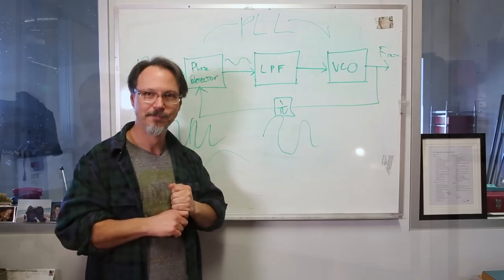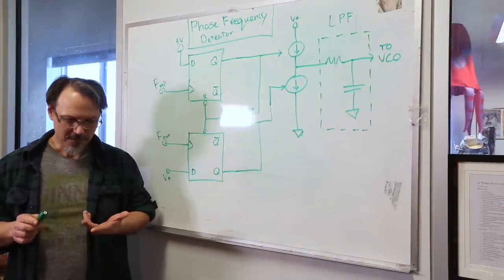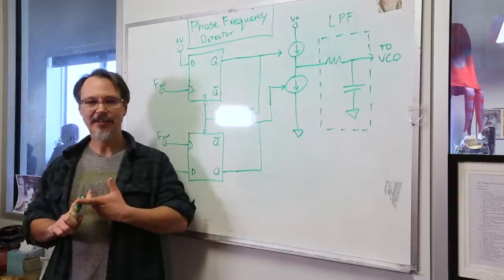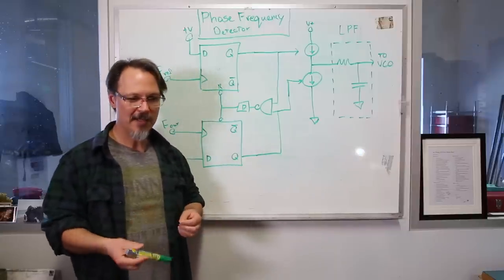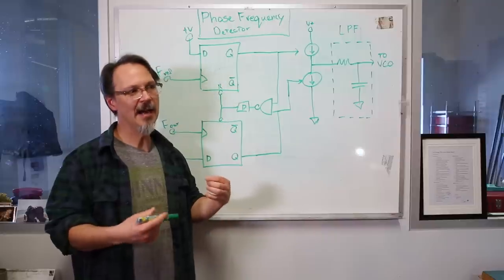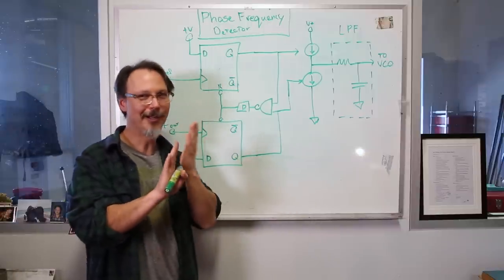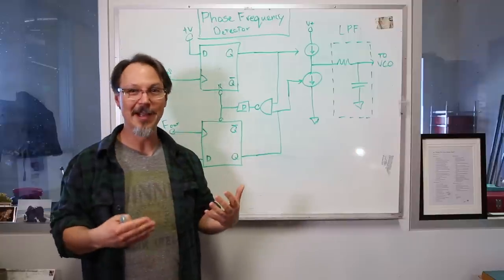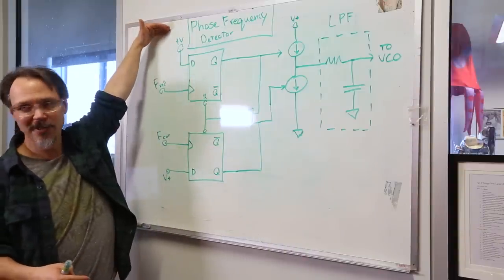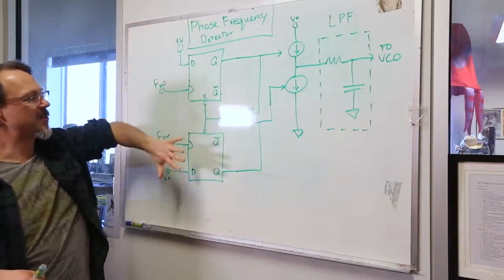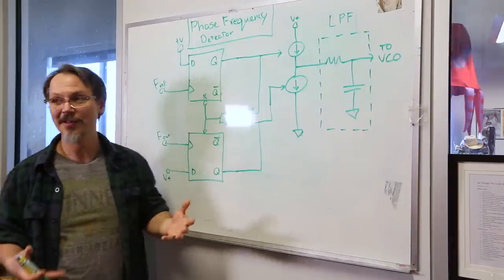Now let's talk about the individual sections. The first is the phase detector. A phase detector proper is not a great choice by itself, because your two reference frequencies have to be really, really close together for it to work at all. What you actually want — and generally have — is a phase frequency detector, or PFD. This circuit topology is not the only one available, but it's common, so I'm going to cover it to give you an idea of how this works.